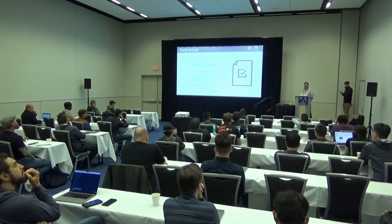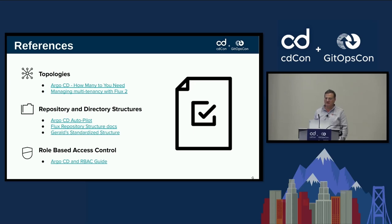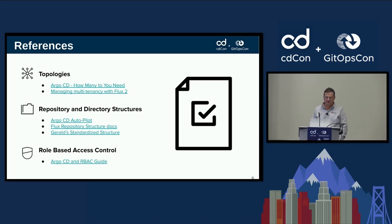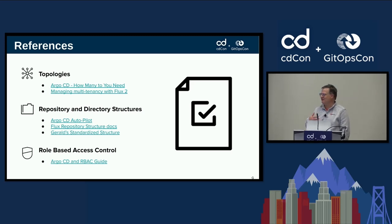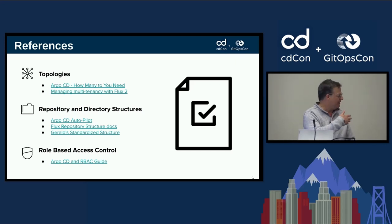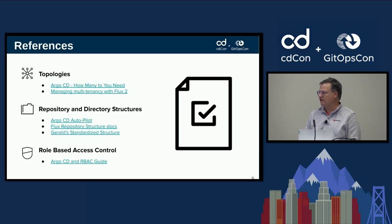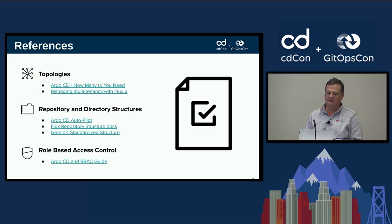Here are some resources you may find useful. Acuity did a great blog on Argo CD and how many instances you need if you're using Argo. Flux also has a great section in their Git repo on multi-tenancy and directory structures. For repositories and directory structures, the Argo CD Autopilot allows you to bootstrap projects quickly and easily. Flux documents their recommended repository structures as well. One thing that comes up a lot when using Argo CD with customers is how to manage RBAC for tenants — there's a great blog from a colleague on configuring RBAC in Argo CD to achieve the isolation and accessibility goals that most platform teams are looking for.